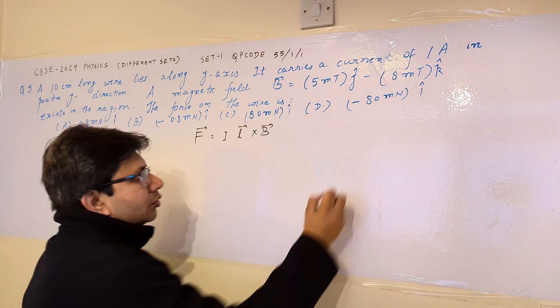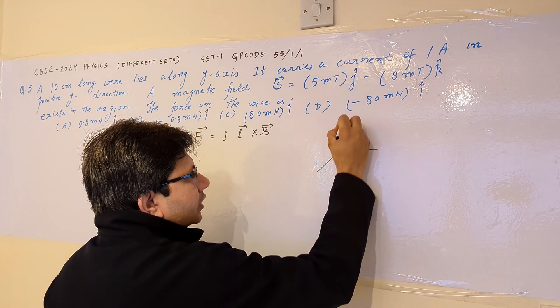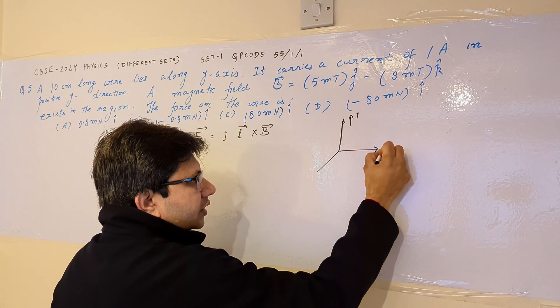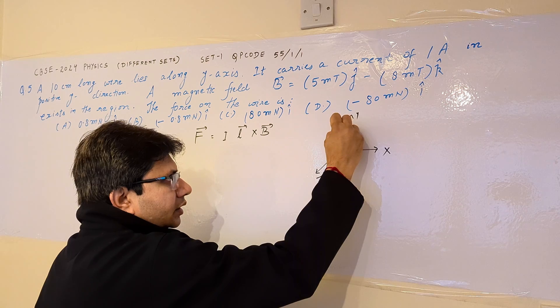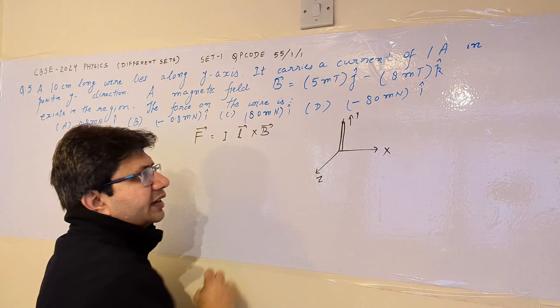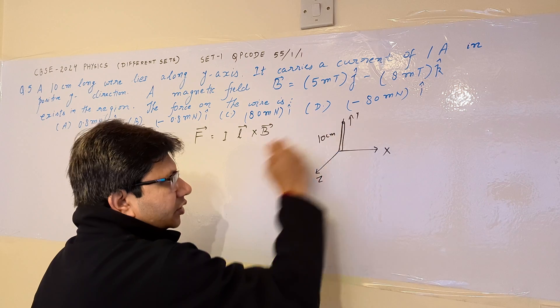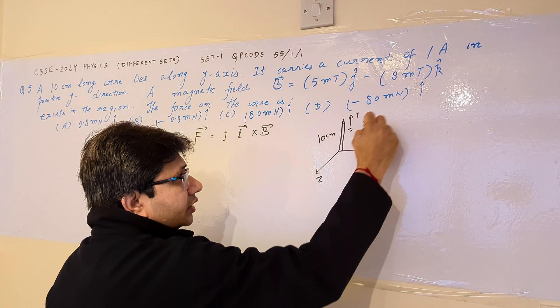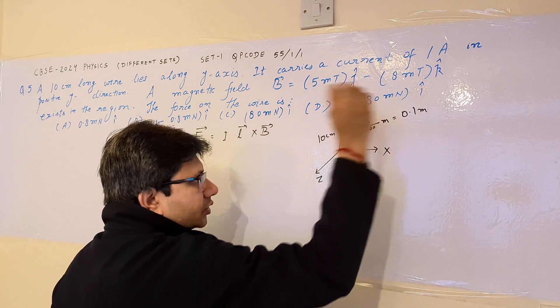Now in this particular problem, the wire is placed along the y-axis. Suppose this is y-axis, this is x-axis, and this is z-axis. So the wire is placed along the y-axis and the length of the wire is 10 centimeters which if we convert it into meters is 10 divided by 100 meters, which is equal to 0.1 meters.